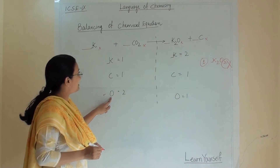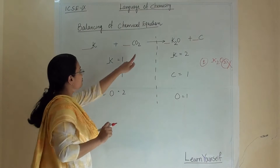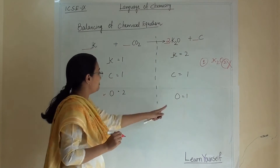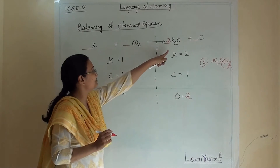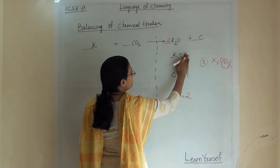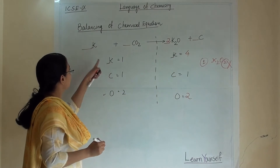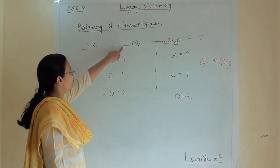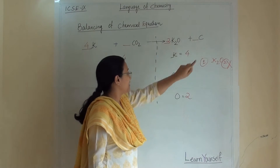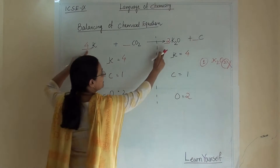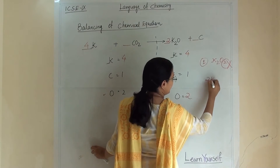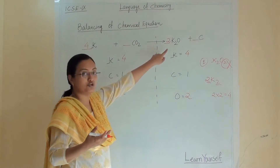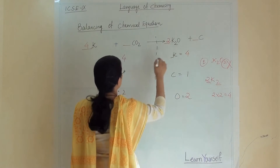We have to balance the oxygen. On the reactant side there are 2 oxygen whereas on the product side there is only 1 oxygen. So if we add a coefficient of 2 in front of K2O, then oxygen is balanced — 2 on both sides. But now potassium has changed: it has become 4 on the product side whereas on the reactant side it is only 1. So if we add 4 in front of K on the reactant side, potassium is also balanced. When you add 2 in front of K2O, you multiply 2 × 2, giving 4 potassium.